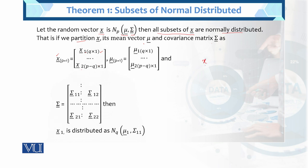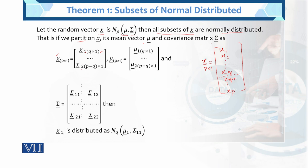Here x is a vector with p×1 dimension. The first subset contains x1 through xq — that is q dimensions — and the second subset contains xq+1 up to xp, giving (p−q) dimensions. The first set has dimension q×1 and the second set has dimension (p−q)×1.